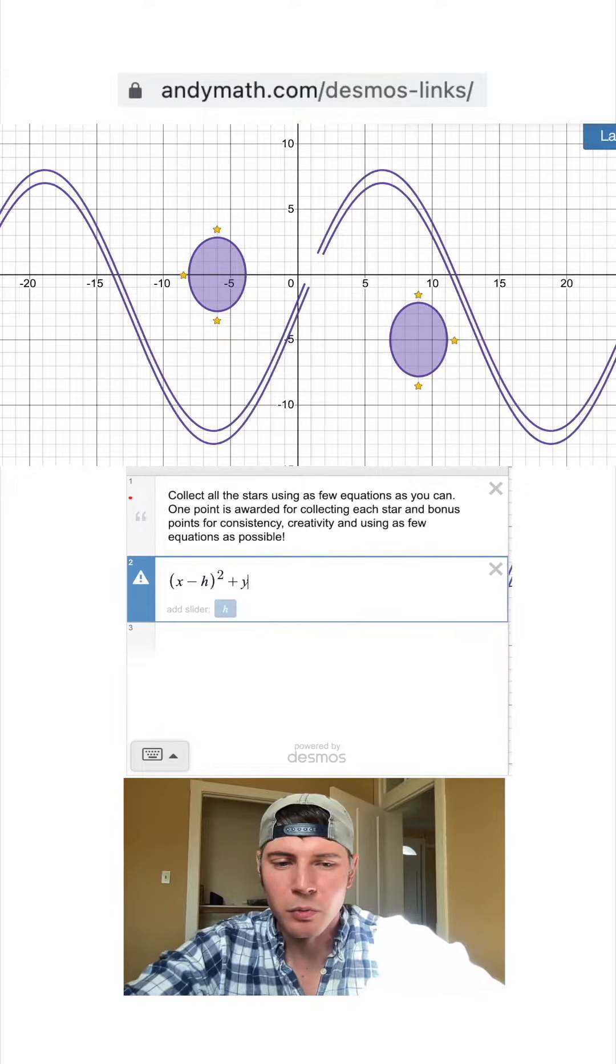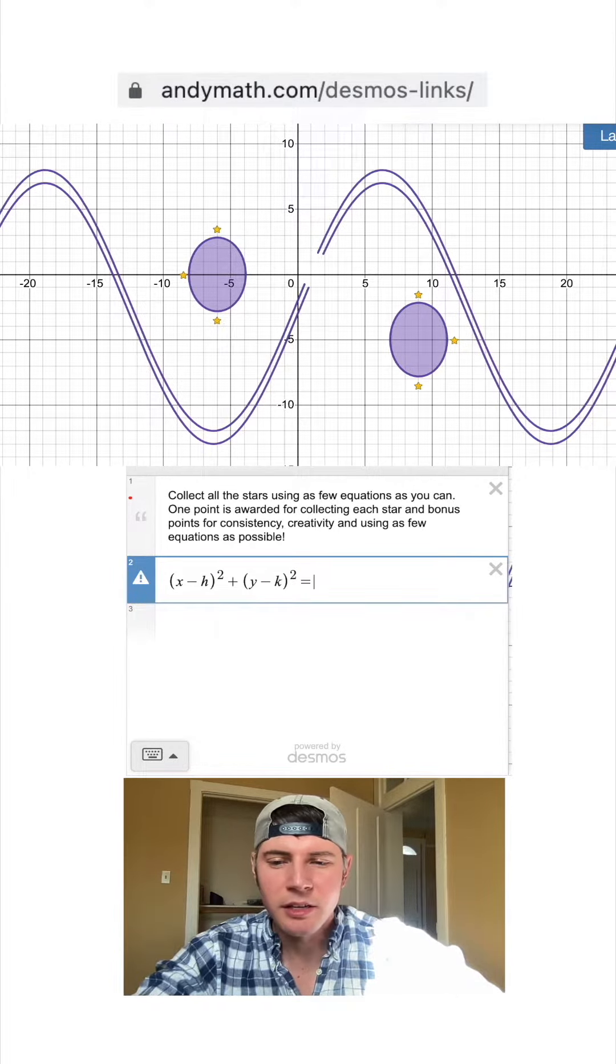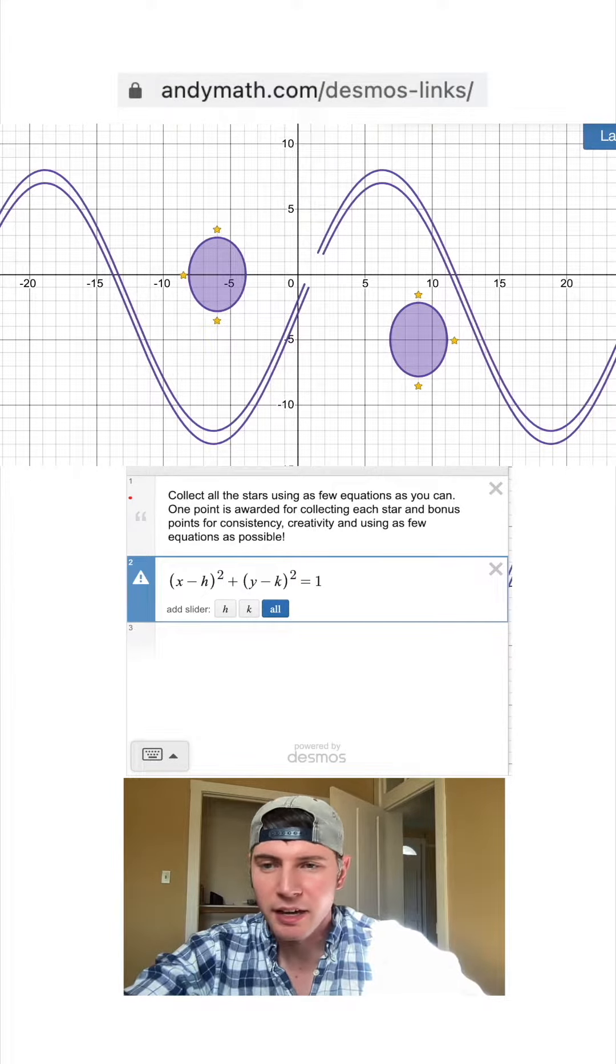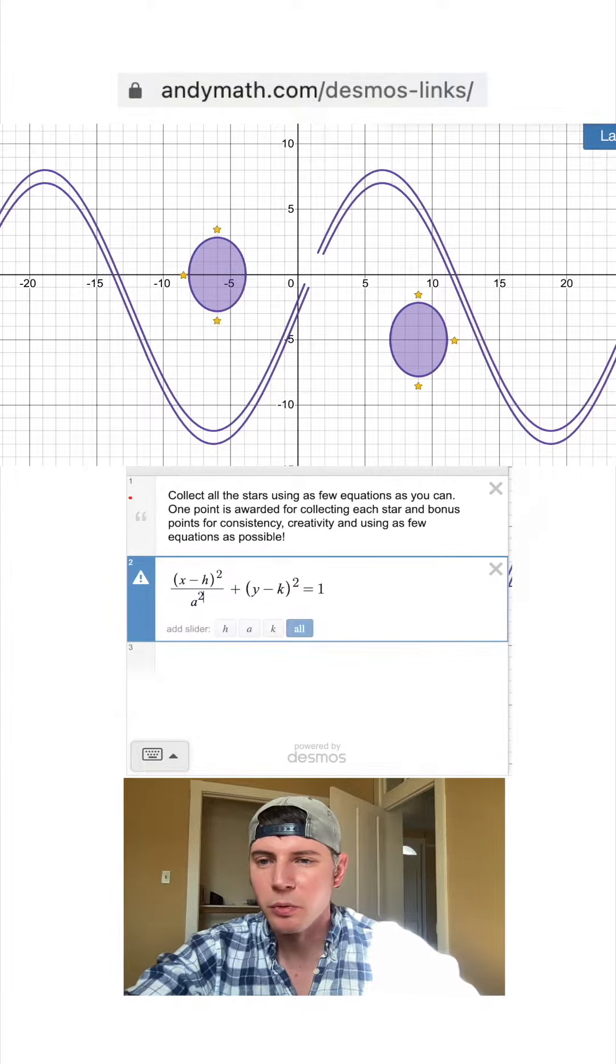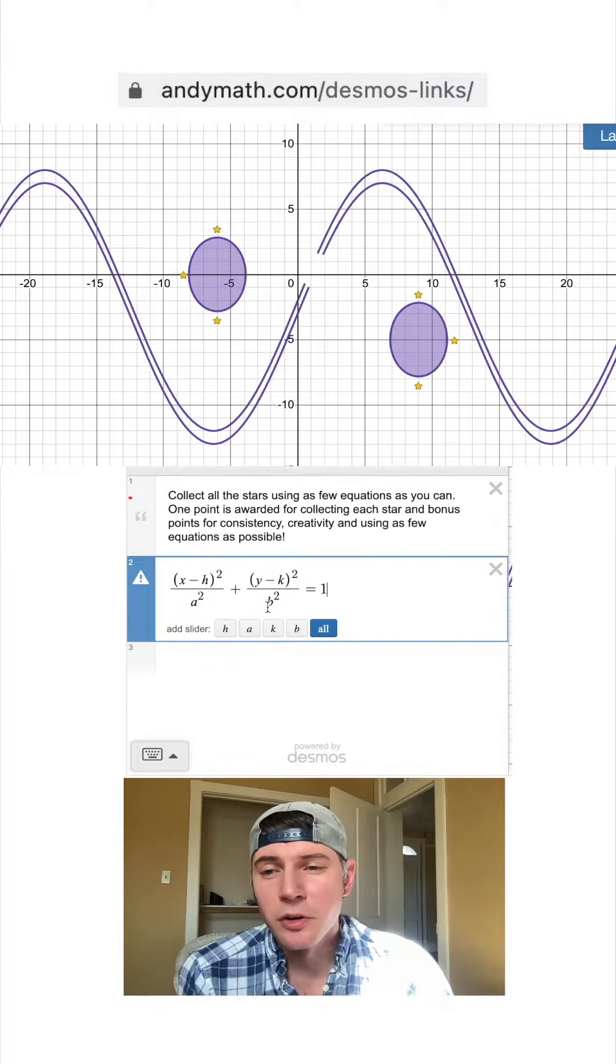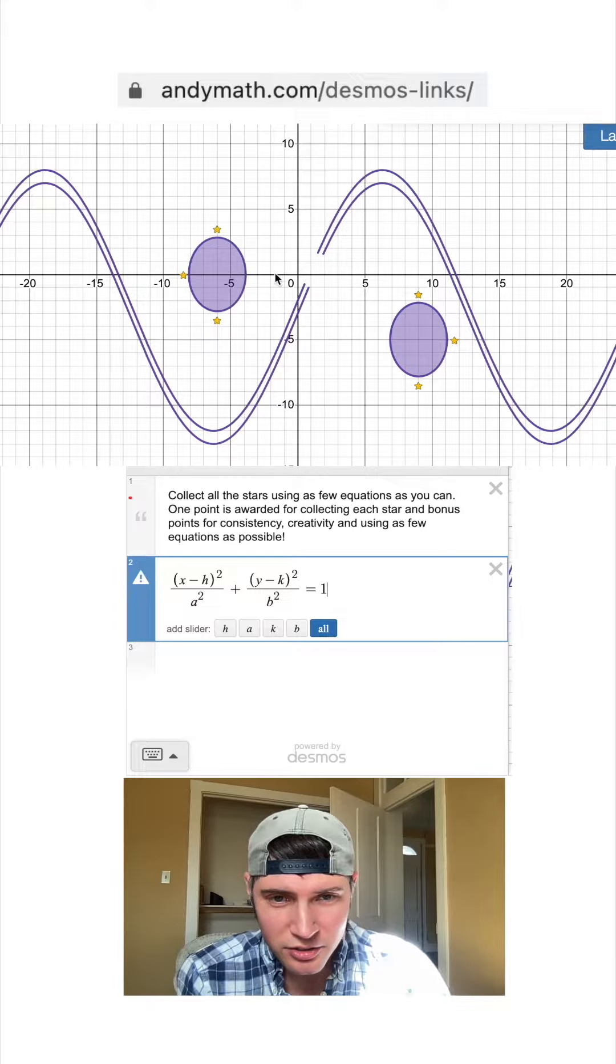The formula is (x - h)² + (y - k)² = 1, which is a circle. To make it an ellipse, we divide the x side by the x radius squared and divide the y side by the y radius squared. So this is the formula right here. h, k is our center.